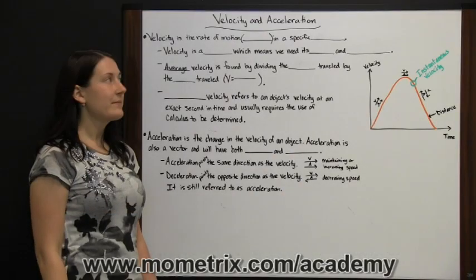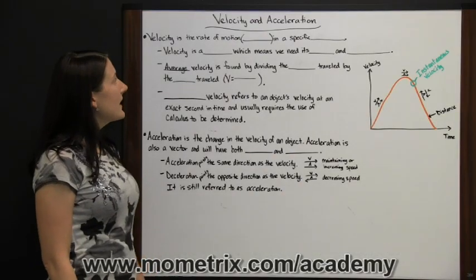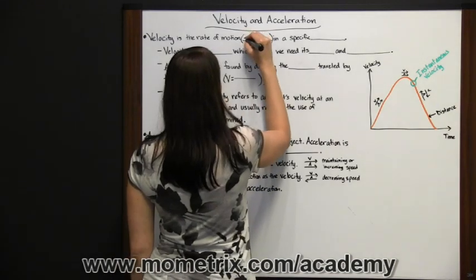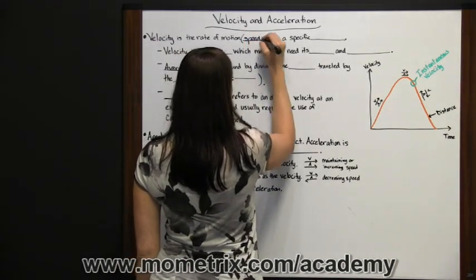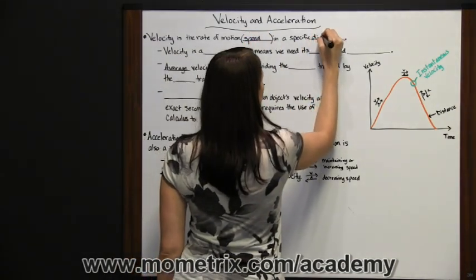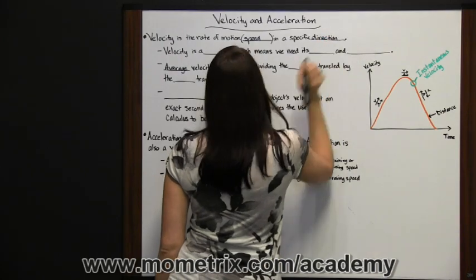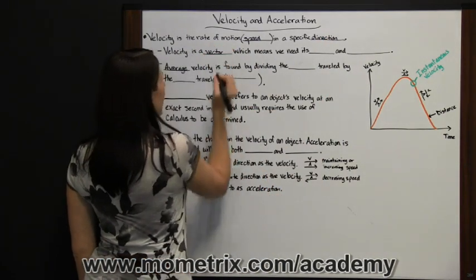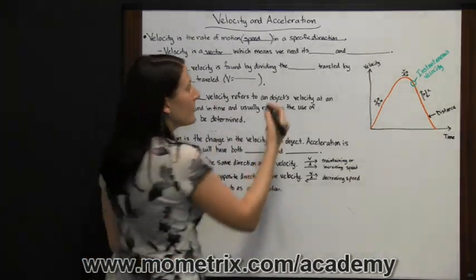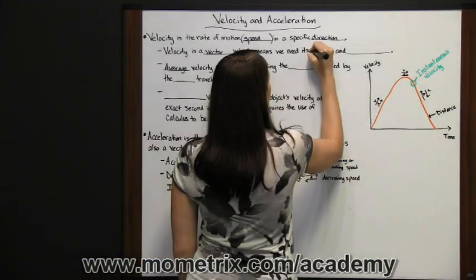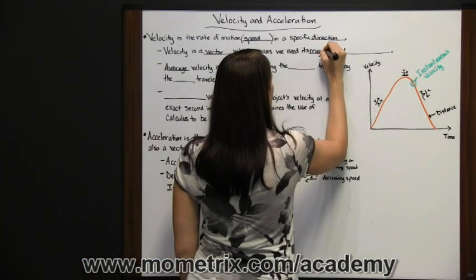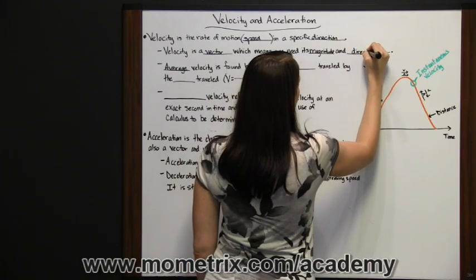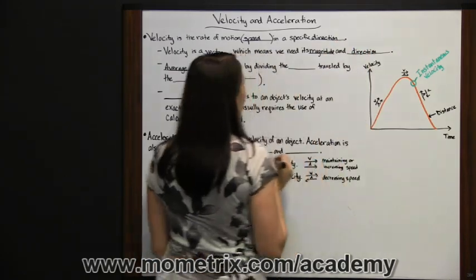Velocity and Acceleration. Velocity is the rate of motion, or speed, in a specific direction. This means that velocity is a vector. We need both its magnitude, or value, and its direction. If we only know the speed, that is not the velocity.